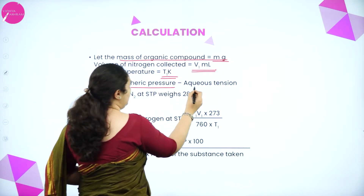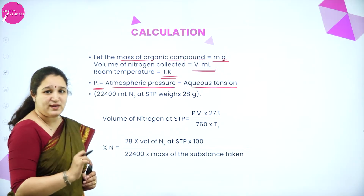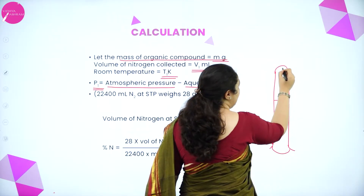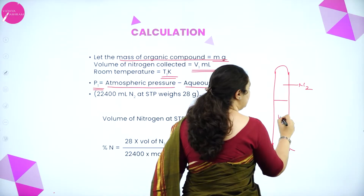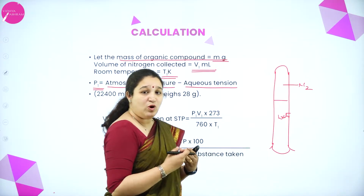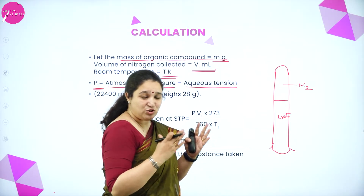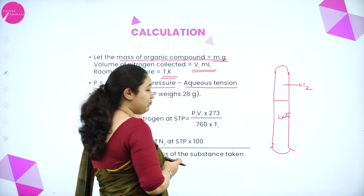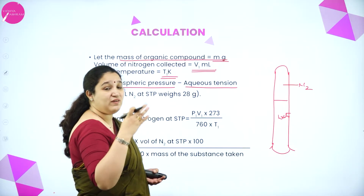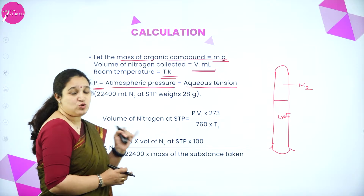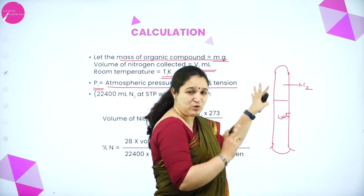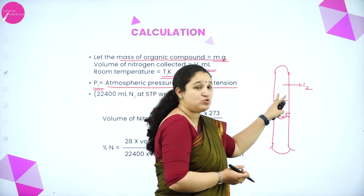For pressure: atmospheric pressure minus the aqueous tension. Why aqueous tension? In the graduated tube, nitrogen gas is collected over water, so there will be some water vapors present. To get the actual pressure, we take atmospheric pressure and subtract aqueous tension. Aqueous tension for every temperature is given in the standard chart, and this gives the actual pressure. So we have: volume of nitrogen, actual pressure (atmospheric pressure minus aqueous tension), room temperature, and mass of organic compound.